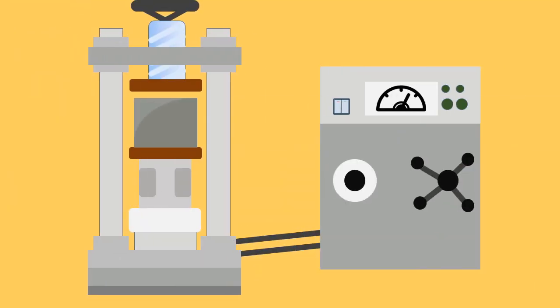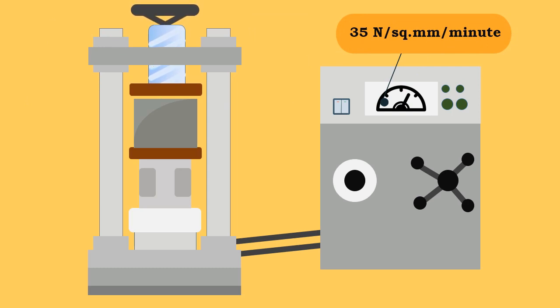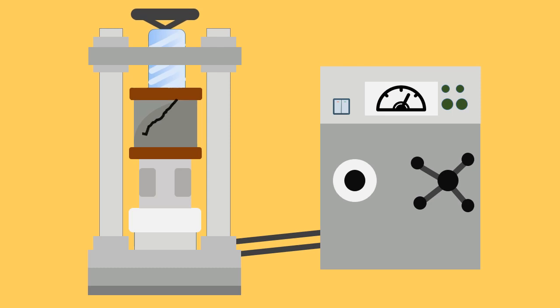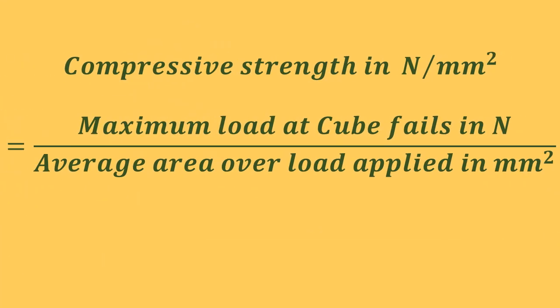After a while, the cubes are taken out for testing in a compression testing machine. The load is applied starting from zero at a rate of 35 Newtons per square millimeter per minute. Note down the maximum load at which the cube fails.